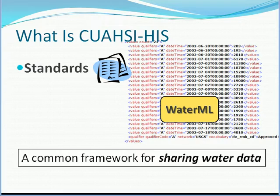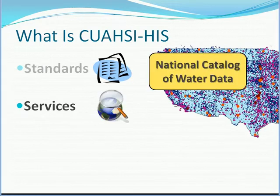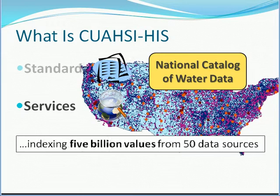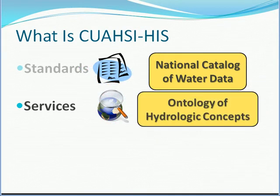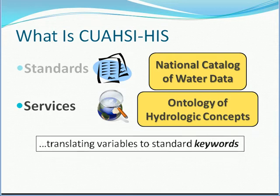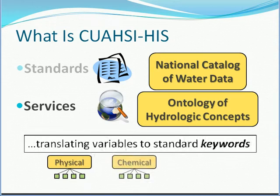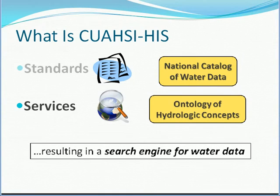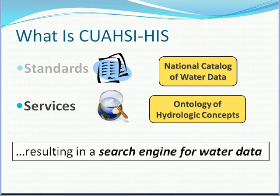Quasi-HIS also provides services, such as a national catalog of water data indexing more than 5 billion data values from over 50 data sources. The hydrologic ontology is a hierarchical set of keywords that we use to establish a common terminology when describing hydrologic variables from a given data source. These two services work together to enable a search engine for water data.